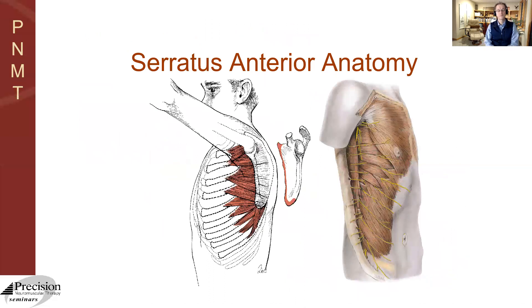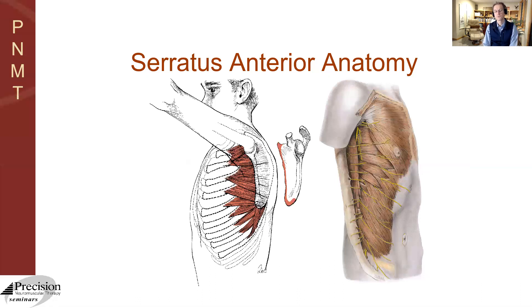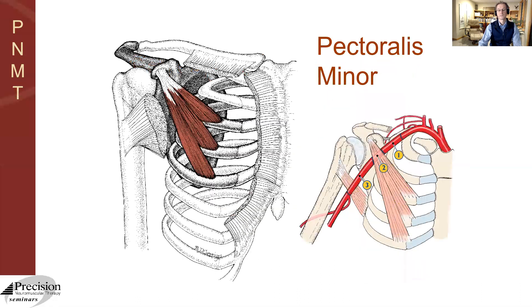We'll spend a little bit of time with the serratus anterior. While we always think of that as a stabilizer and also protractor of the scapula, if the scapula is stabilized, its action is on the rib. That's an inversion where the attachments actually invert themselves — what was the origin is now the insertion. Pectoralis minor also, because it's attached to the ribs, plays a very important role for all the same reasons as the serratus.